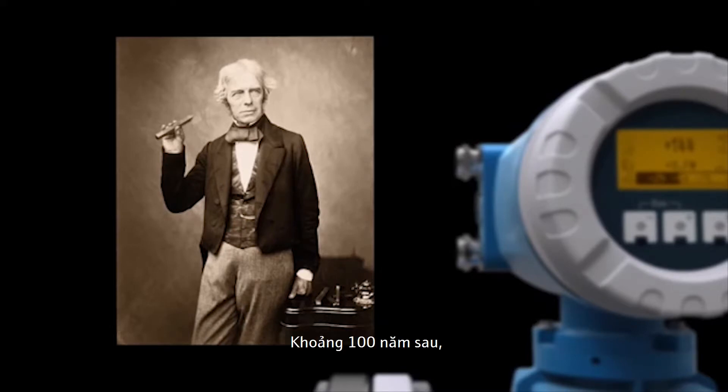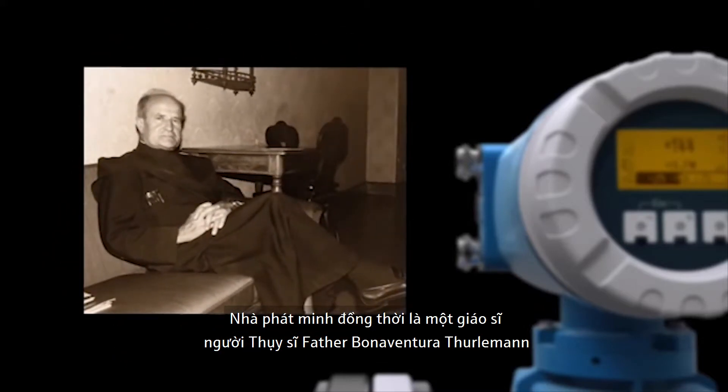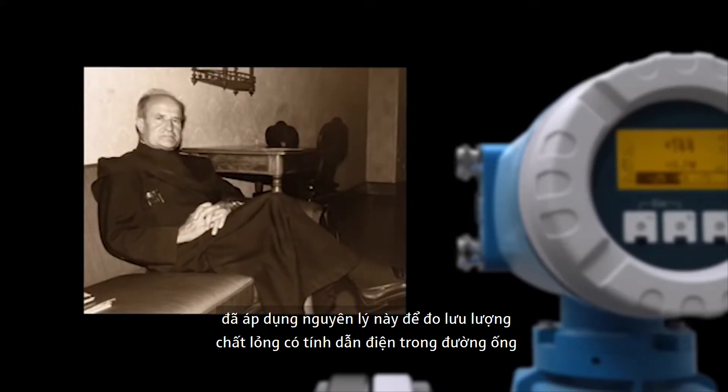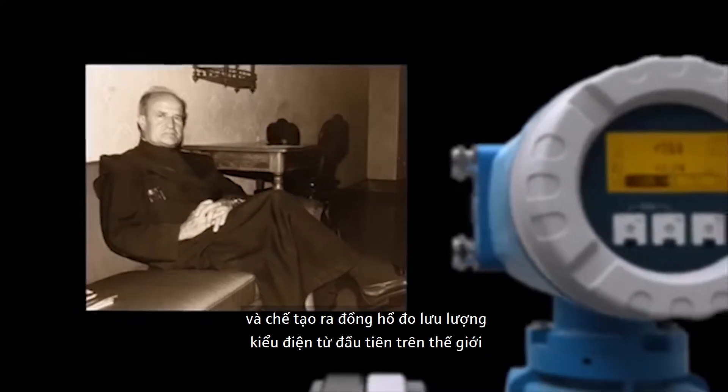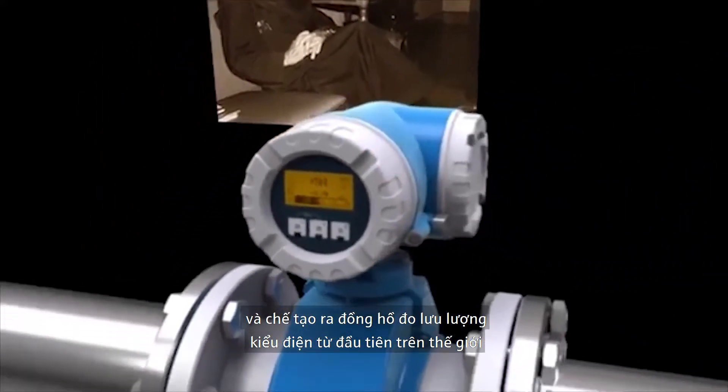Roughly 100 years later, the Swiss inventor and priest, Father Bonaventura Thurliman, applied this knowledge to electrically conductive liquids flowing in pipes and built the world's first electromagnetic flow meter.